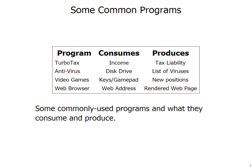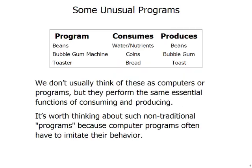In addition to these common programs, there are some things that we might not think of as programs but are worth thinking about anyway. For instance, consider something like beans. Beans aren't what we usually think of as a program, but they fit into this model of a consumer and a producer. Beans consume water and nutrients and produce beans, so that makes it a simple kind of computer.